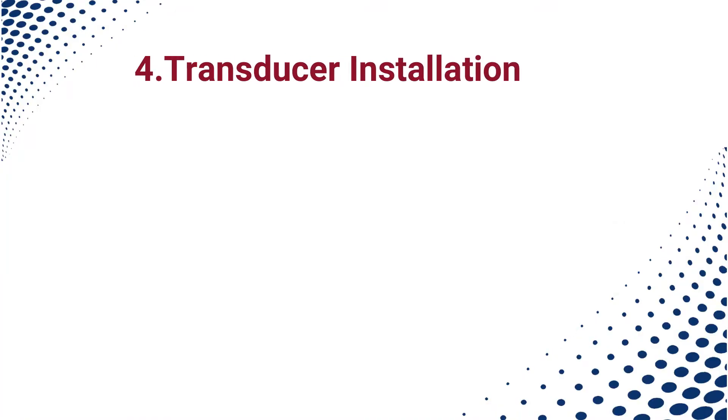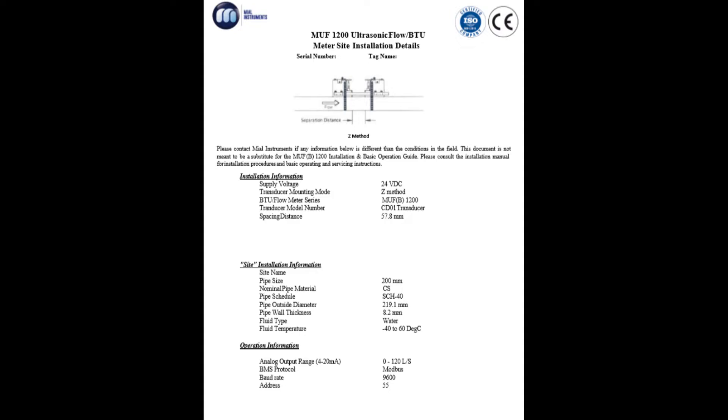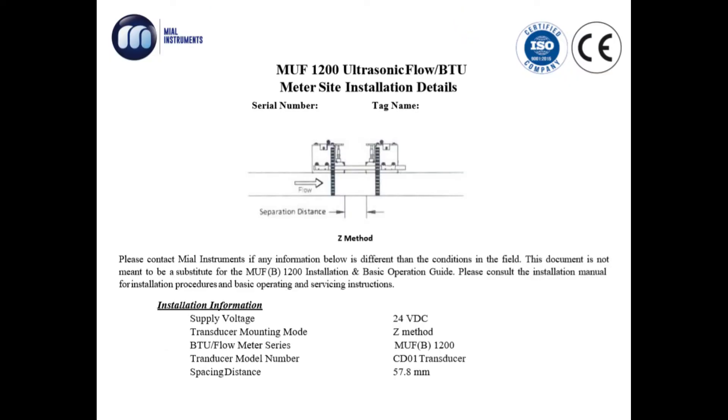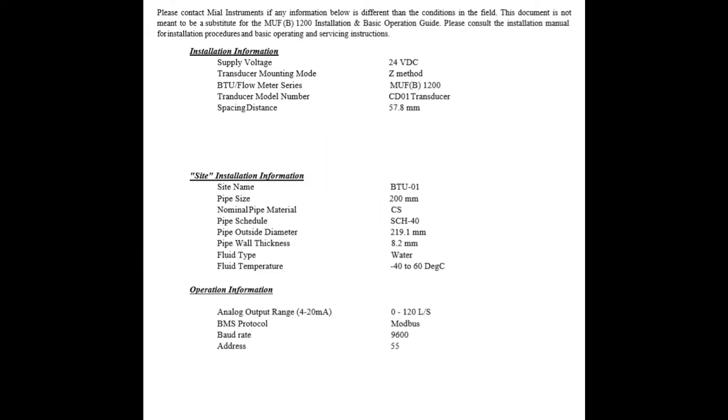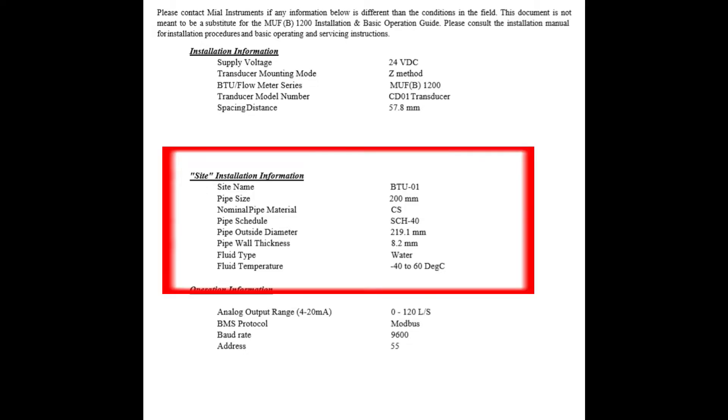In this section, we demonstrate how to install using the Z method. Before doing installation, refer to the site installation data sheet for configuration and installation details. Check and confirm the actual pipe size in the site and the programmed and calibrated pipe size in the meter are the same. If there are any changes, please contact us for further technical support.